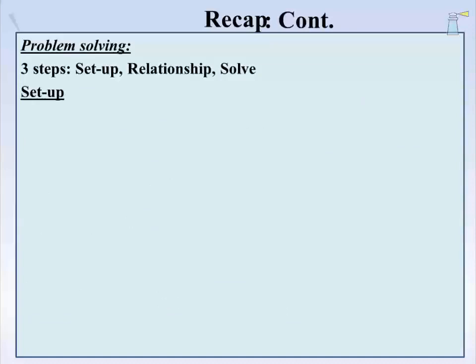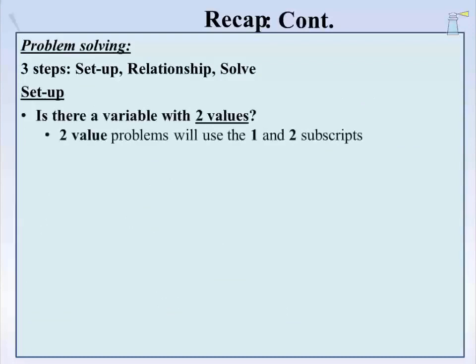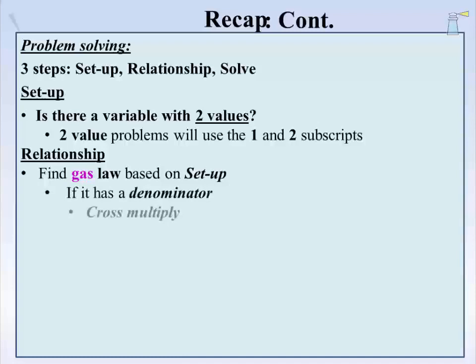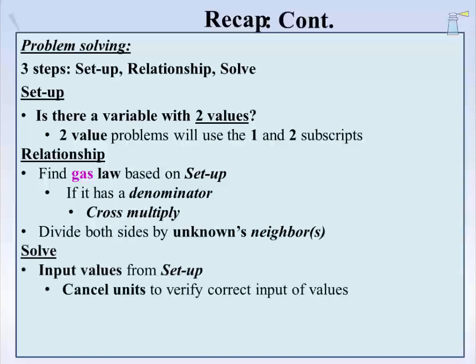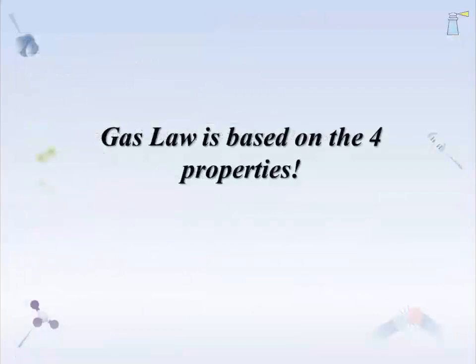We also looked at problem solving as related to gas law using our three-step problem solving technique. In the setup, we asked if the problem had any of the four properties of a gas given with two values. When this is the case, subscripts 1 and 2 are used to indicate before and after the change in condition. In the relationship step, we looked for a gas law based on the variables in the setup and a recognition of what properties were held constant. The unknown variable was then isolated by one or two steps: if the gas law had a denominator, we cross-multiplied to remove denominators; then we divided both sides of the equation by the neighbor or neighbors of the unknown. We solved by inputting values from the setup and canceling units. And that concludes our lecture.